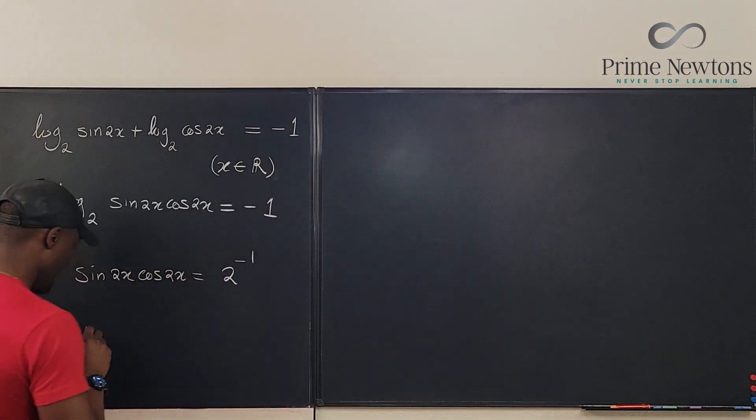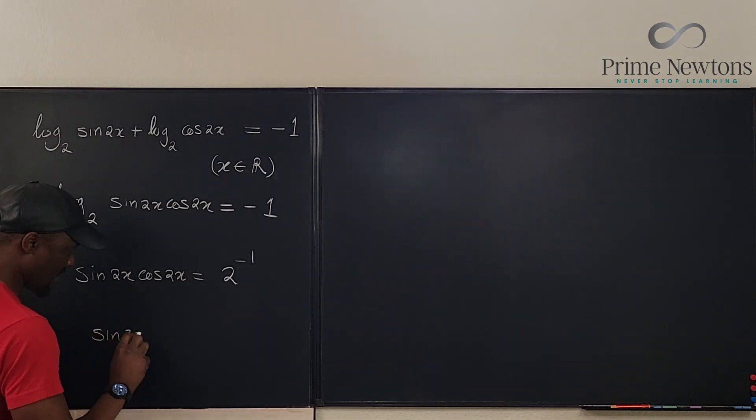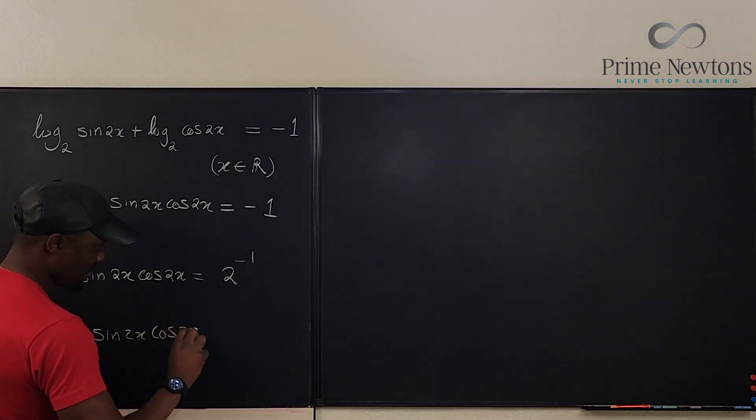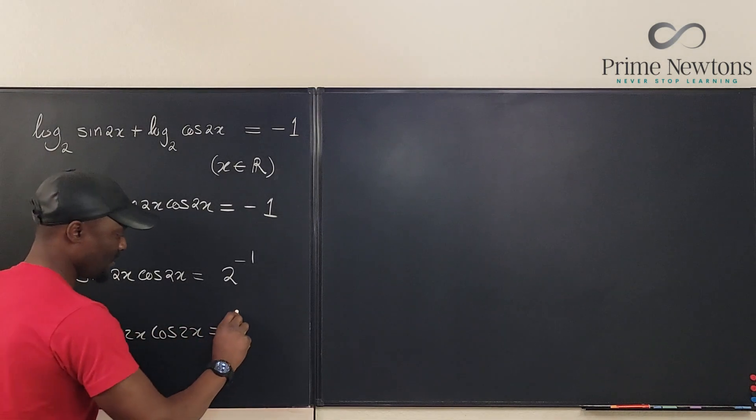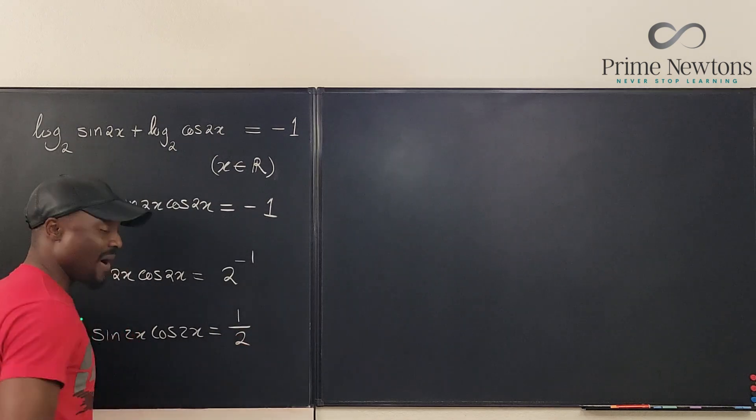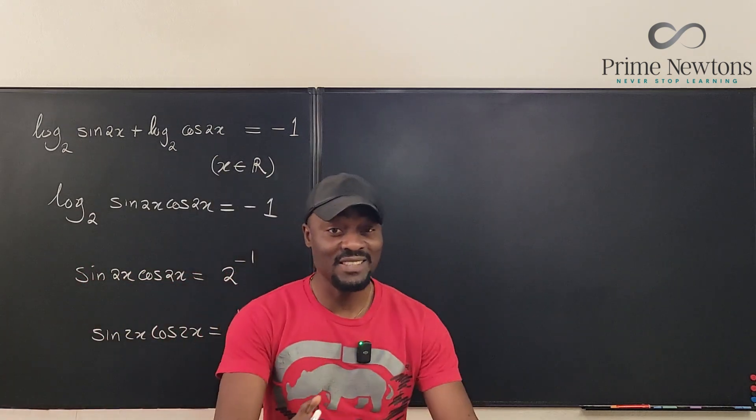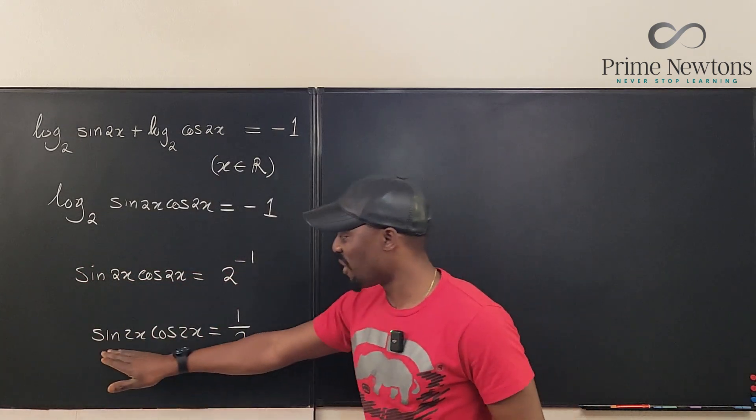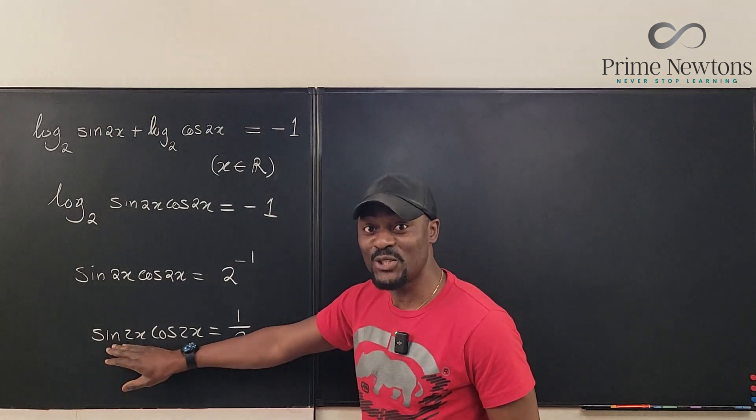Okay, so what do we have here? This is going to be one half. So it looks like I have sine 2x cosine 2x equal to 1 over 2. Now I need to find x, but clearly I can see that the double angle formula is already showing up.